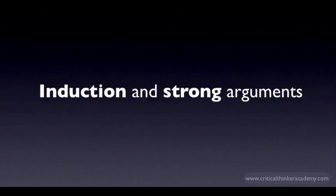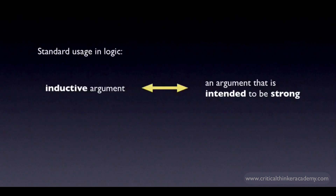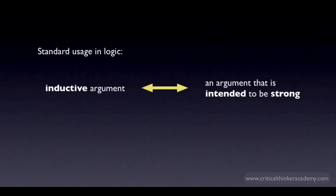In logic, there's a close relationship between deductive and valid arguments, and there's a similar relationship between inductive and strong arguments. In standard logic, the term inductive argument basically means an argument that is intended to be strong rather than valid. So when you give an inductive argument for a conclusion, you're not intending it to be read as valid. You're acknowledging that the conclusion doesn't follow with certainty from the premises, but you think the inference is strong — that the conclusion is very likely true, given the premises.